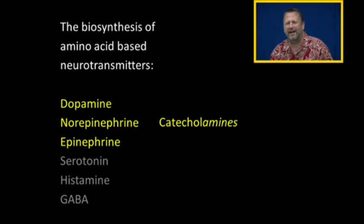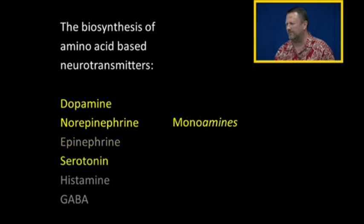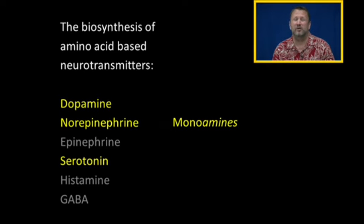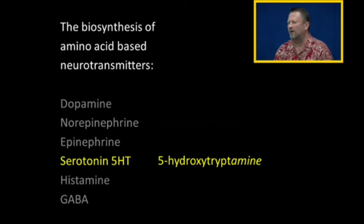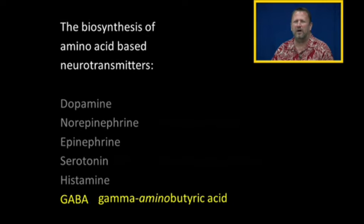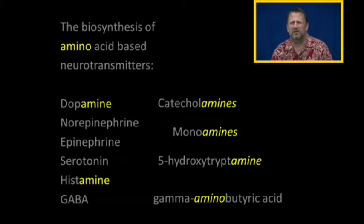Dopamine, norepinephrine, and epinephrine are referred to as catecholamines. Dopamine, norepinephrine, and serotonin are referred to as monoamines. Norepinephrine and serotonin are commonly associated with disorders of mood. Serotonin is also called 5-HT, which stands for 5-hydroxytryptamine. Gamma-aminobutyric acid is GABA. We're going to talk about biologically active amines later on.